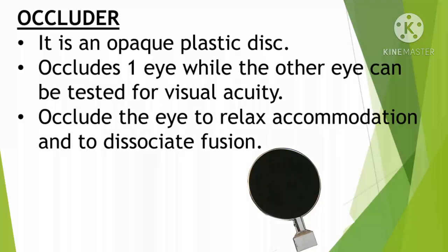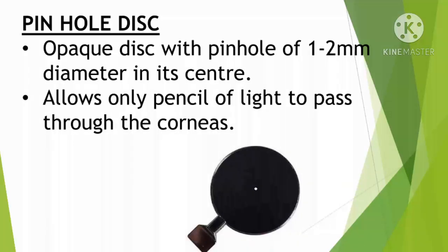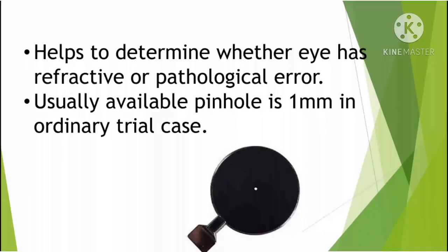The Occluder is like a plastic disc through which nothing can be seen. With the help of the Occluder, we cover one eye to break fusion and test the visual acuity of the other eye. The Pinhole disc looks similar to the Occluder, but the major difference is that it has a hole in the center of 1-2 mm diameter; the pinhole in the trial box usually has a 1 mm diameter hole. With the pinhole, we can determine the maximum possible improvement in a patient's vision, and whether the reduced vision is due to refractive error or pathological error. If vision improves with the pinhole, it indicates refractive error; if it does not improve, it indicates a pathological error.